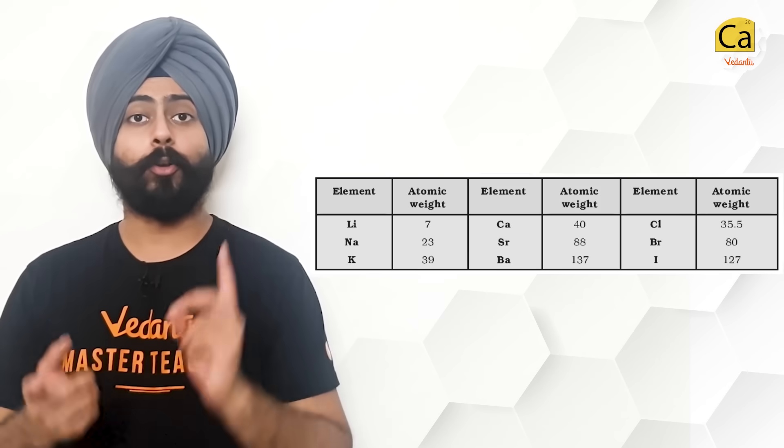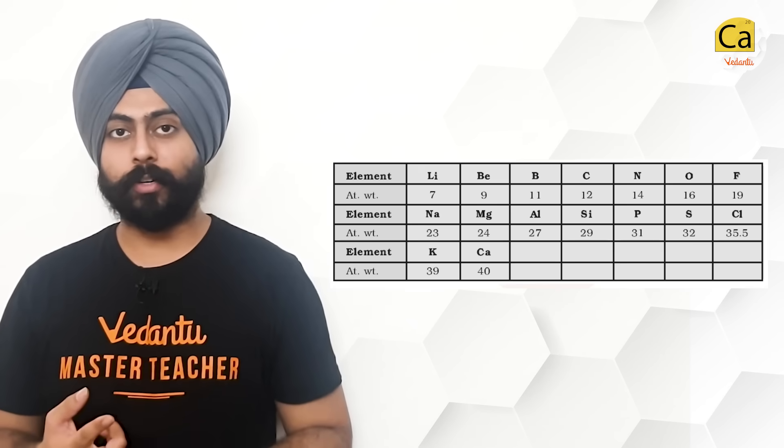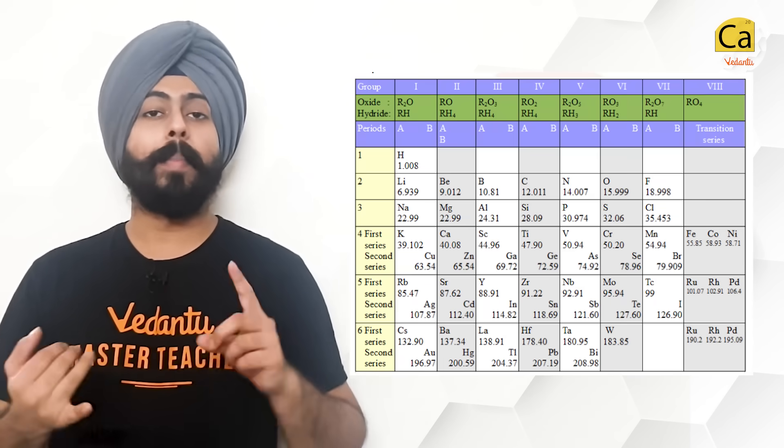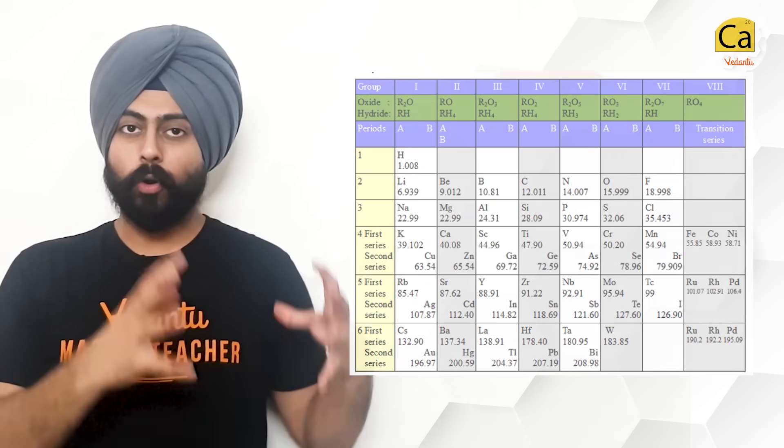In the world of chemistry, we have so many elements that we need to classify them properly. The quest for this began in the early 1800s and we went through a lot of models of the periodic table. For example, the Döbereiner Triads, the Newlands Octaves, Lothar Meyer's Curves, Mendeleev's Periodic Table. All of these were based on the idea that the properties of elements are a periodic function of atomic masses. Mendeleev's Periodic Table was considerably better than the others because Mendeleev had also considered a lot of experimental evidence.